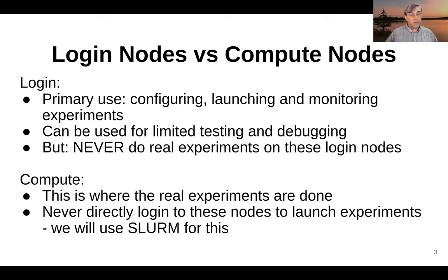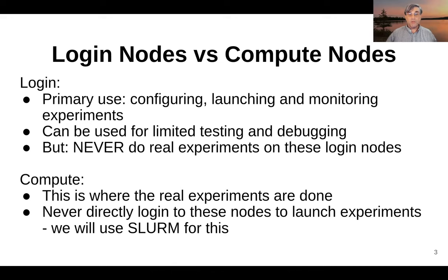The compute nodes — there are something on the order of about a thousand compute nodes on our supercomputer, and this is where the real work happens. You don't generally interact with the individual compute nodes, and in particular you should never log into a compute node and start launching experiments there. You have to go through the SLURM daemon to queue up your experiments.